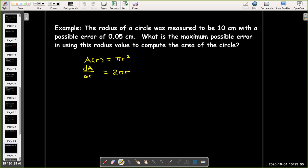Well, we know that A is pi r squared. A is a function of r. If I calculate dA by dr, then we'll get 2 pi r.